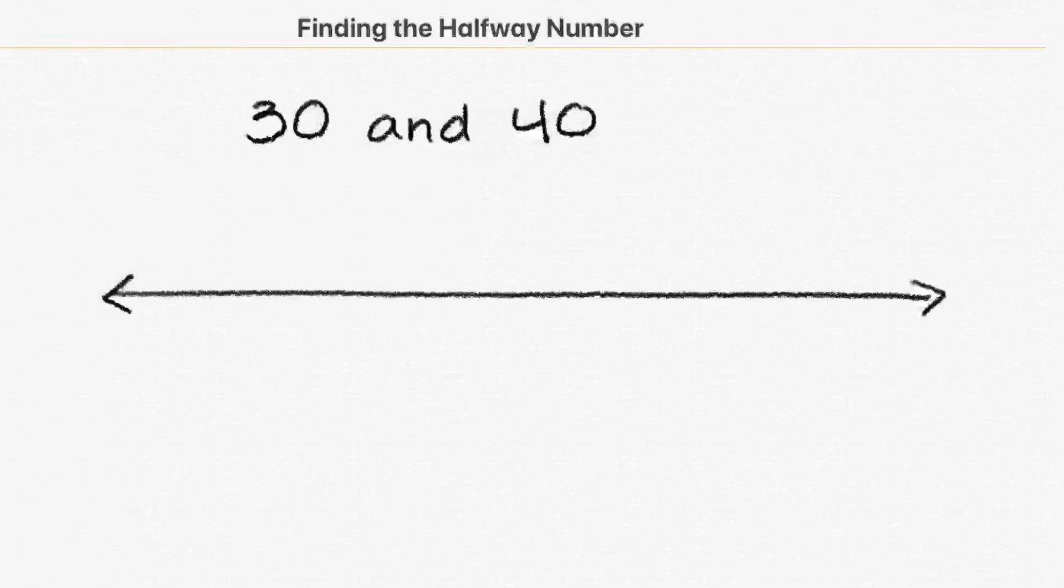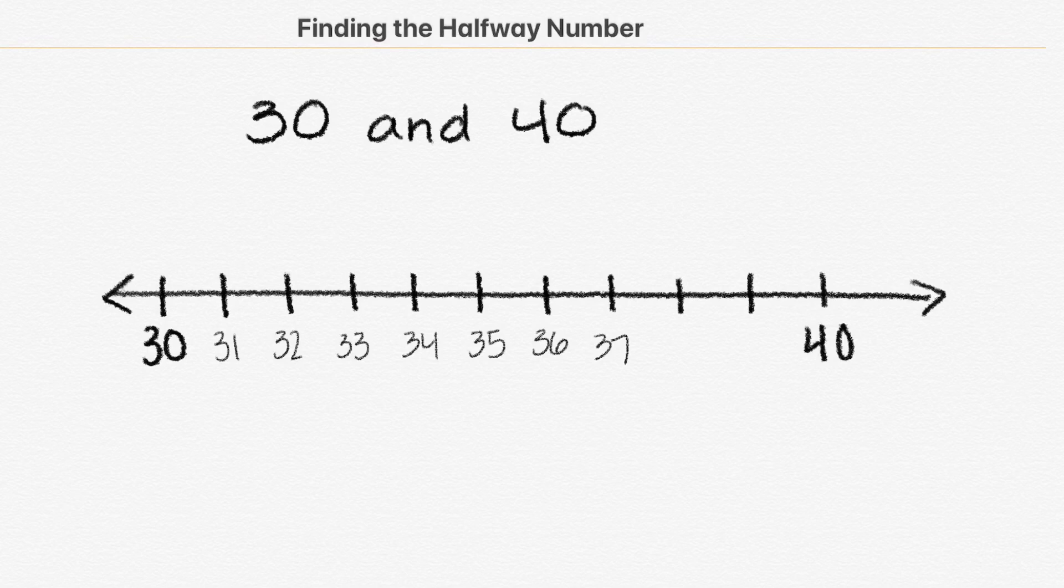This number line is going to have 10 tick marks. Now we will label our number line from 30 all the way to 40. That includes 30, 31, 32, 33, 34, 35, 36, 37, 38, 39, and 40.